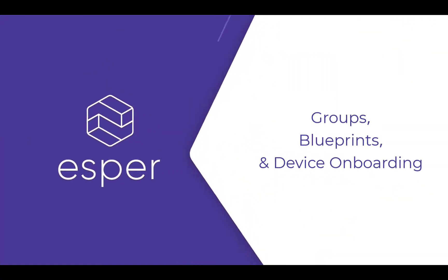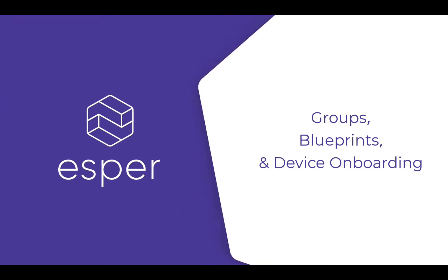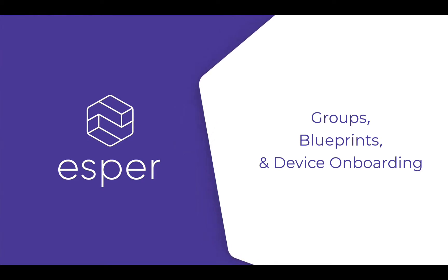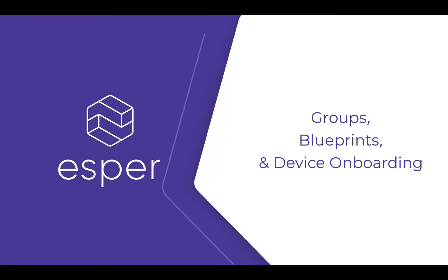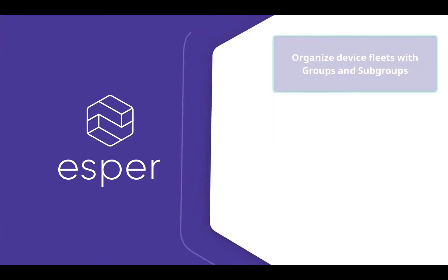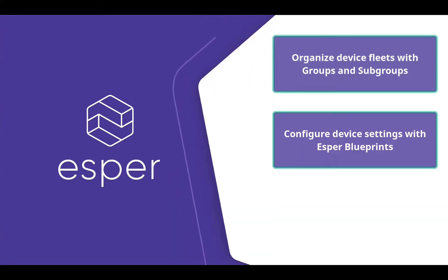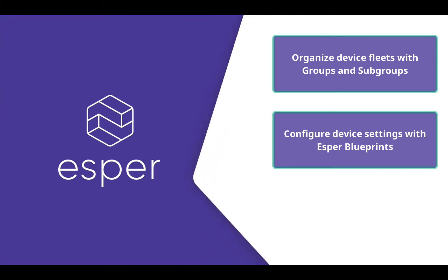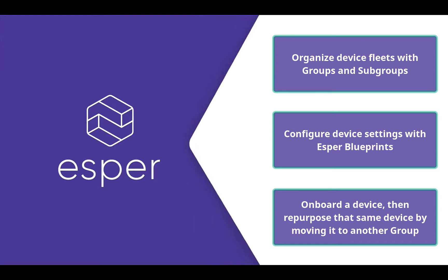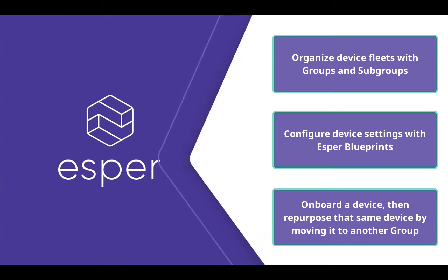Welcome to this overview series of Esper's new features. Today, let's talk about groups, blueprints, and device onboarding, and walk through an example of how a hypothetical coffee shop chain, Andy's Coffee, uses Esper for creating groups and subgroups to organize their device fleet, configuring their fleet on a group and subgroup level with blueprints, and finally, onboarding their devices into a group, then repurposing that device by moving it to another group.